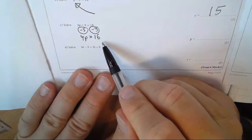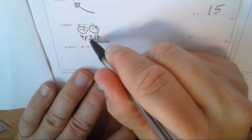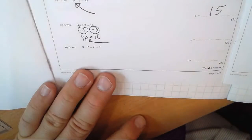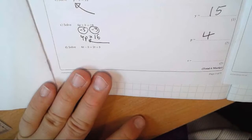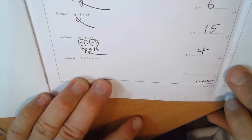That gives me 4p is 16. Okay, if 4 lots of p is 16, what must each p be? That's 4 times by p is 16. 4 times 4 is 16, so p must be 4. And quite a few people did get that one right as well.